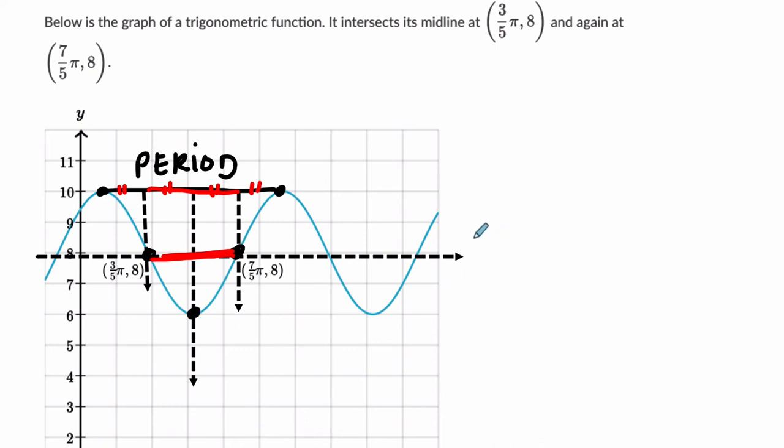again, we're in a situation where we subtract the x values in any order. We're taking the absolute value in the end, and then we take that, and it's half of the period, so we double it.